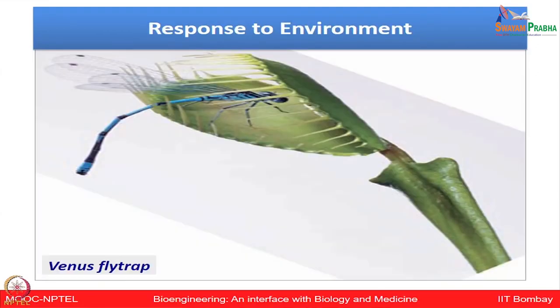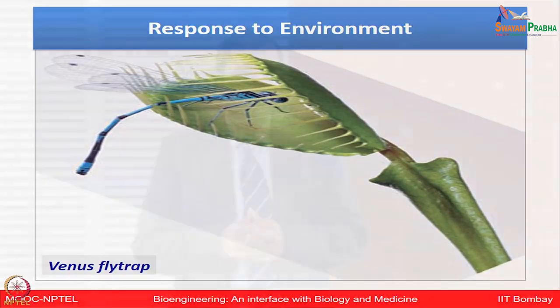You can now see this Venus flytrap. It is an interesting example of how, in response to the environment, the trap rapidly receives a stimulus and gets closed as soon as the damsel fly lands on it. In response to the environment, it can make those immediate quick actions and respond to that environmental condition.